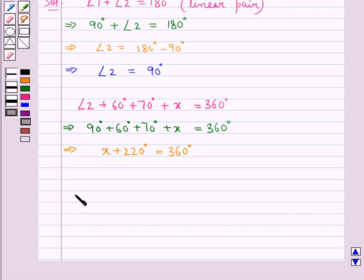Now we transpose this 220 to the right hand side. So we have x is equal to 360 degrees minus 220 degrees which implies x equal to 140 degrees.